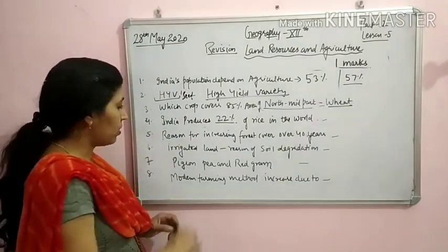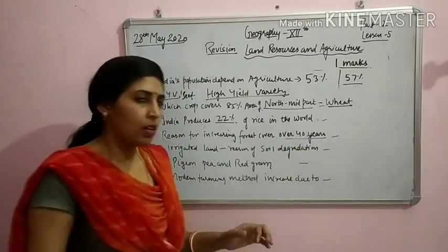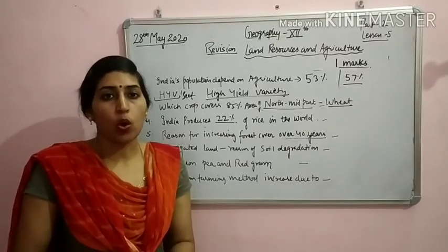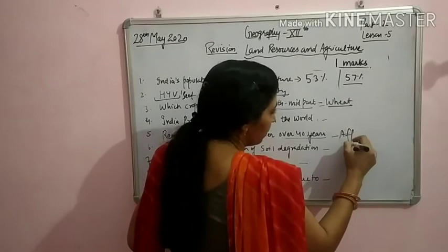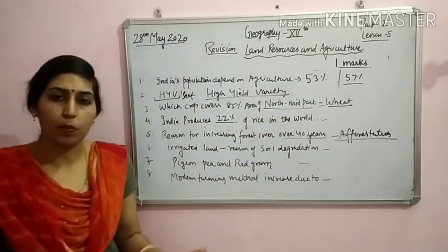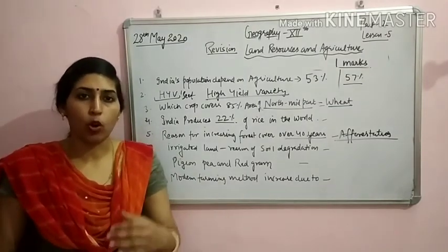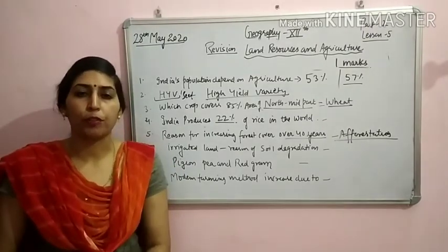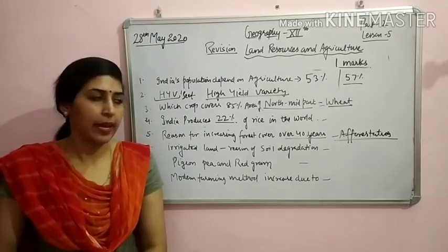Next question: reason for increasing forest cover over 40 years. In the last 40 years, land under forest has increased. The main factor for this is afforestation. Afforestation has been done — through awareness, people were told about the disadvantages of deforestation, and we started optimal use of timber. New plants have been grown and forest area has been increased.